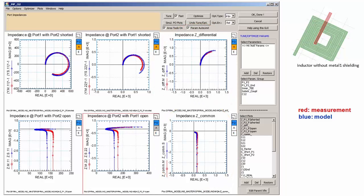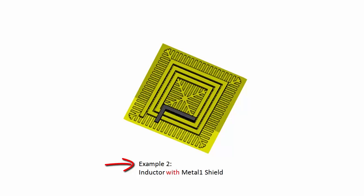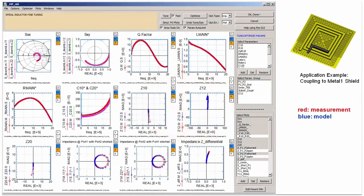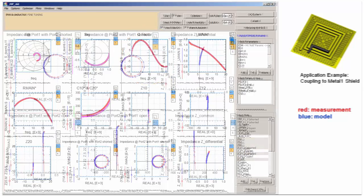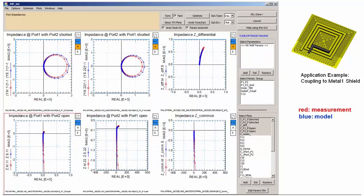The same IC-CAP modeling project can also be applied to the other example mentioned at the beginning, a spiral inductor with metal 1 shielding. And here are the results. Once again we see the S-parameter fit, the Q-factor and the components of the SPICE-PI schematic. Finally, the model verification against different port terminations and operating modes.